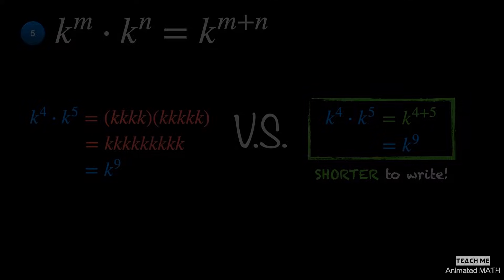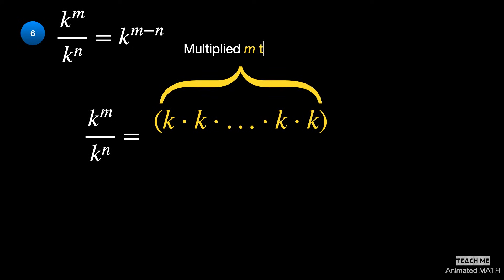The sixth property. Similar to the last example, how many times do you have to multiply k by itself? First, multiply m times.